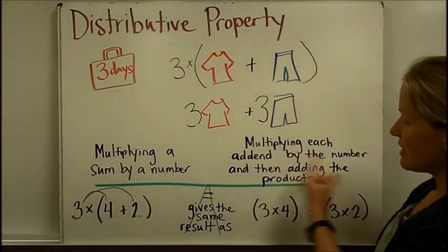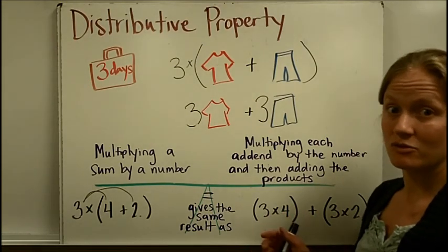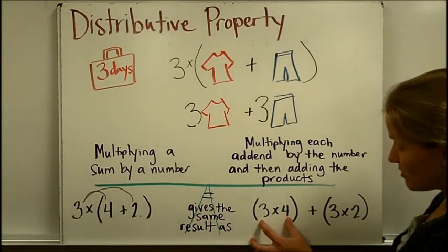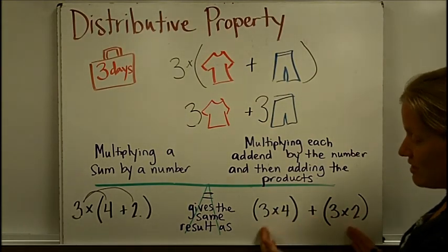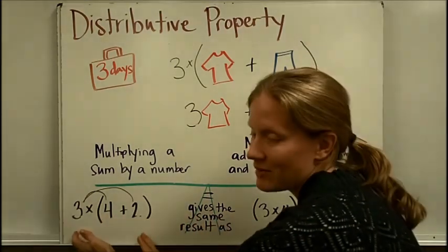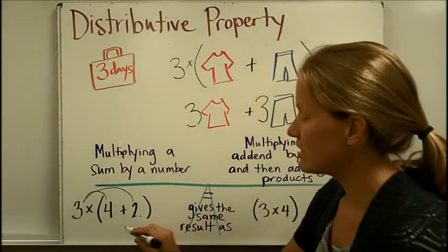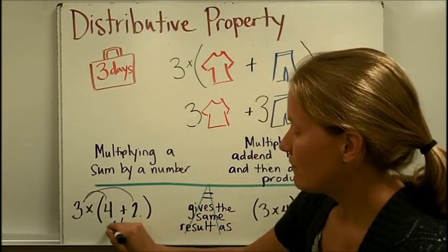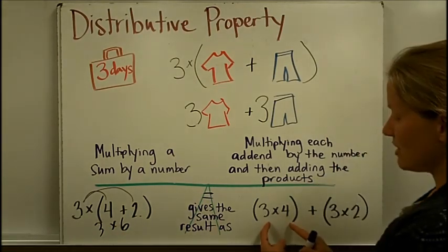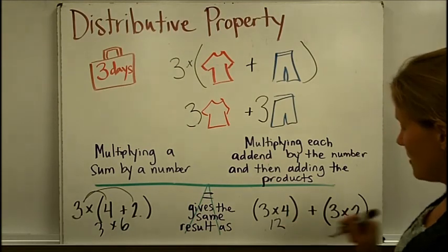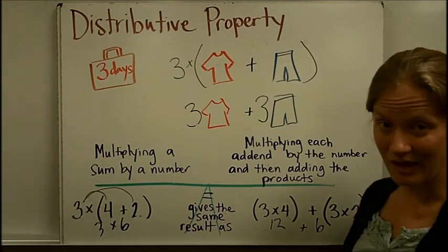So I multiplied each add-in by the number and then adding the products. Products are the answer to a multiplication problem. So I got this answer to a multiplication problem, and this answer to a multiplication problem, and then I added them together. This is going to give me the same answer as this. Let's go back and prove it. Parenthesis means do this first. Four times two is six. Times three will be 18. This side of the balance will give me 18. Over here, three times four is 12. Three times two is six. When I add those together, I also get 18.